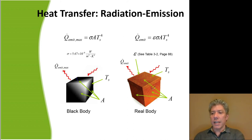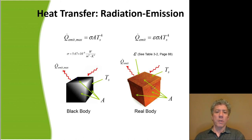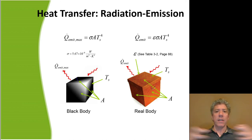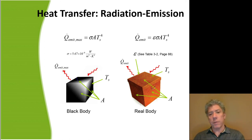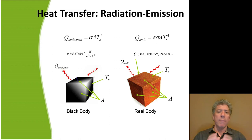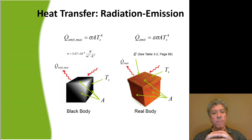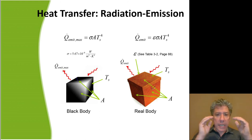Everything above absolute zero glows. We're talking about a literal transfer of energy where your body is giving off radiation right now because you're not at absolute zero. A black body is a theoretical body that emits radiation perfectly — there's no such thing, but some things come very close. A black body follows exactly this equation and sends out the maximum amount of heat for the temperature that it's at.